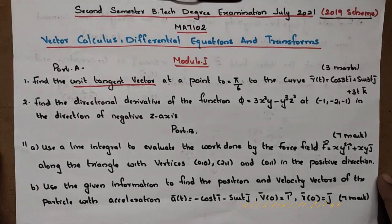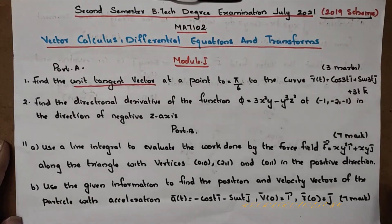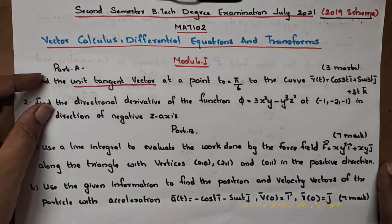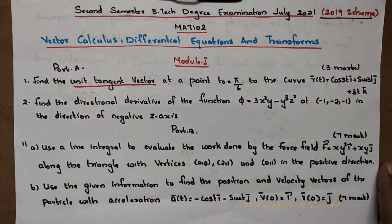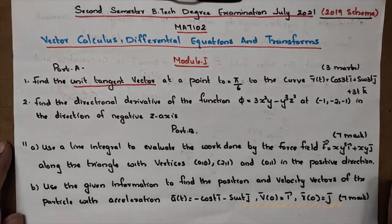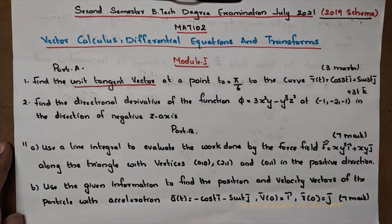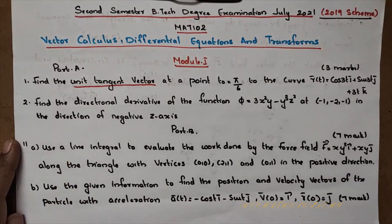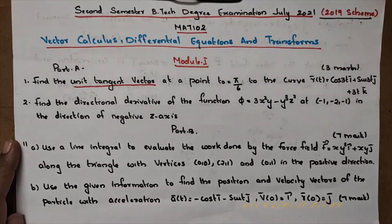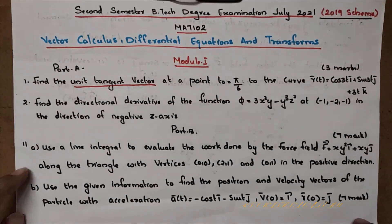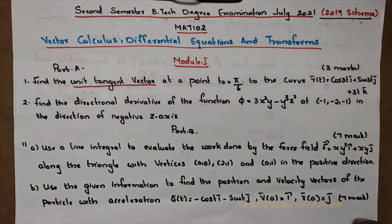We will talk about 2 questions in Part A. This is Part B: 11 AB and 12 AB — we will discuss 4 questions covering module 1. The video is split into parts. In the next video, we will talk about questions 11 AB.